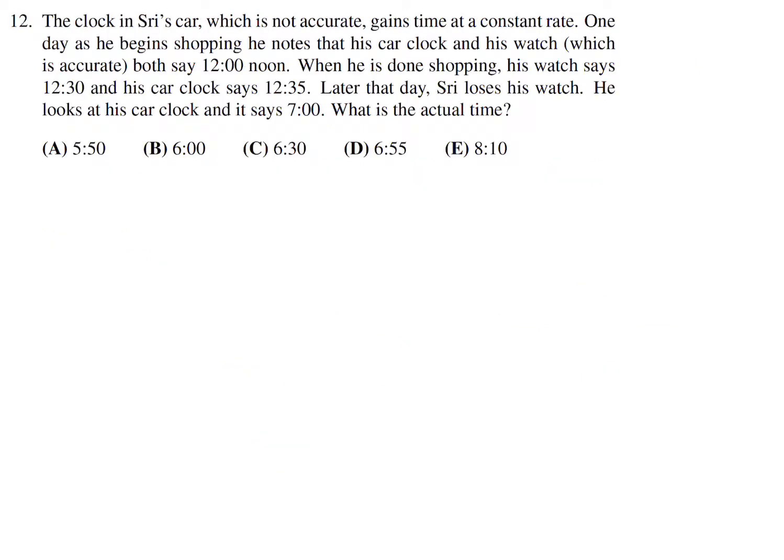The clock in Sri's car, which is not accurate, gains time at a constant rate. One day, as he begins shopping, he notes that his car clock and his watch both say 12. When he is done shopping, his watch says 12:30 and his car clock says 12:35. Later that day, Sri loses his watch, looks at his car clock and it says 7 p.m. What is the actual time?